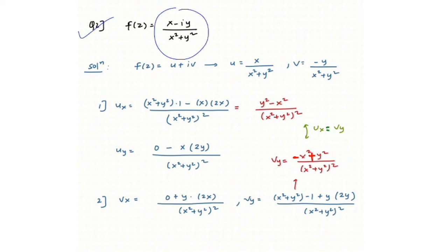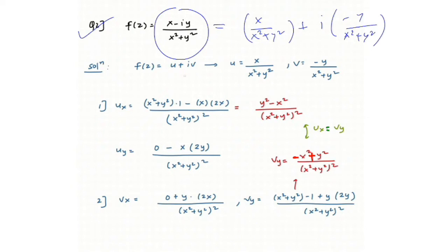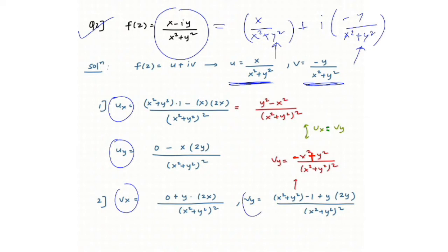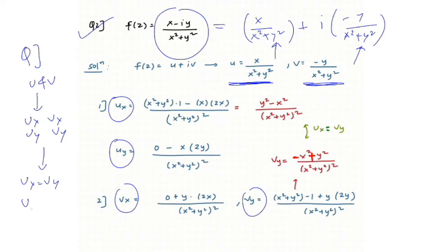Question number two: f(z) is given with separable parts, written as x/(x² + y²) + i·(−y/(x² + y²)). So the real part u = x/(x² + y²) and v = −y/(x² + y²). You have to find uₓ, u_y, vₓ, v_y — always find all four terms — then check the Cauchy-Riemann conditions: uₓ = v_y and u_y = −vₓ.